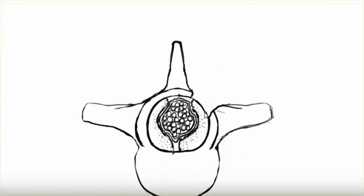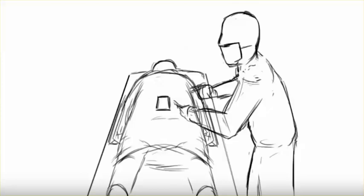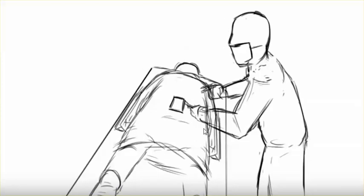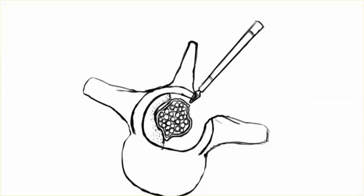Using kerrison punch and other instruments, the spinal canal is opened on one side. After that side is open, the table is tilted. Then using the microscope at an angle, you undermine the posterior spinous process.